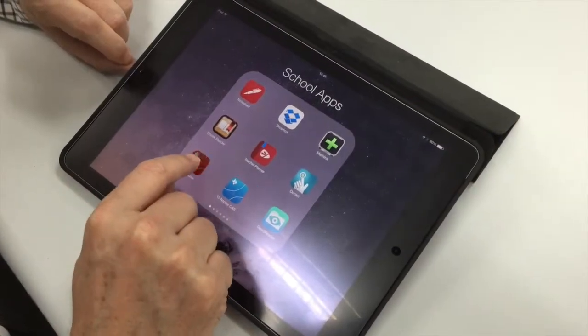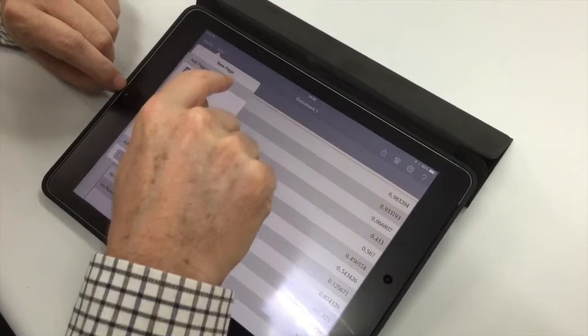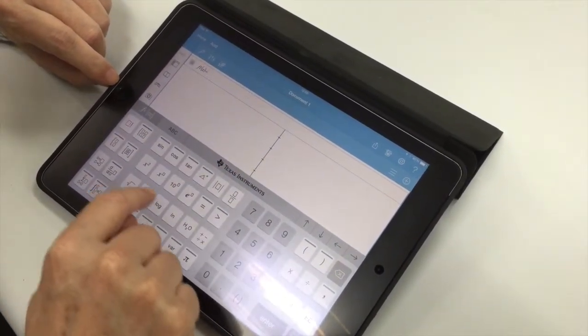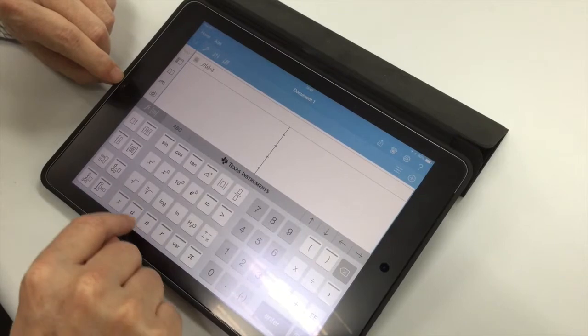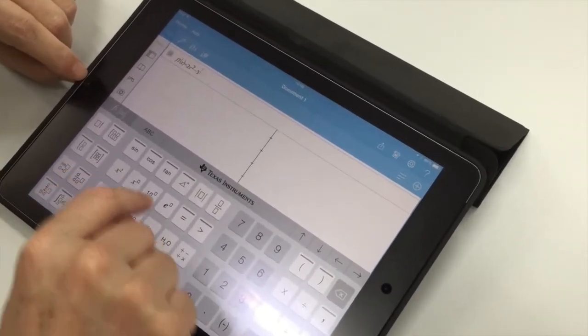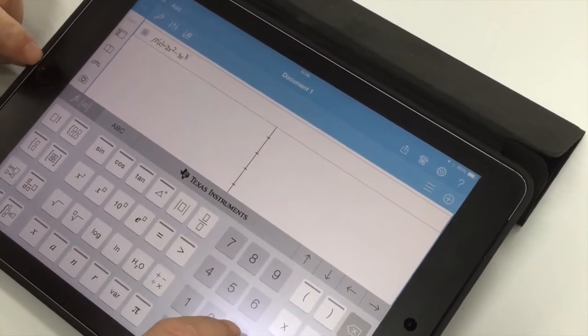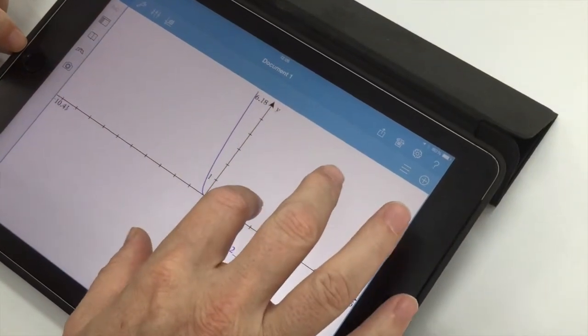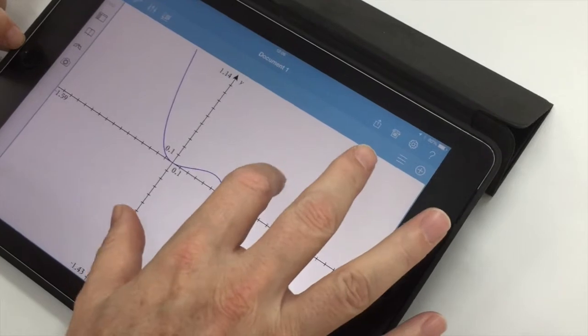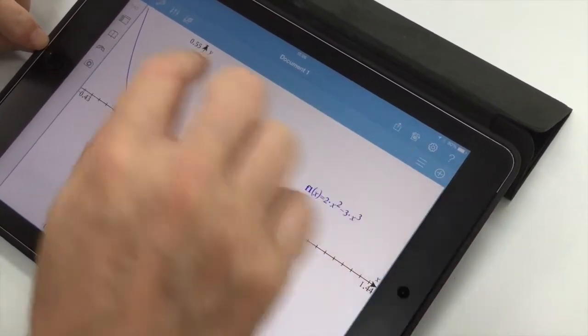For the IB students we use the TI Inspire CX calculator. Here we can see an iPad version. The app is being used to demonstrate the geometrical interpretation of integration, i.e. the area enclosed by the curve and the X axis. Here the students will see very clearly the visual representation of integration.